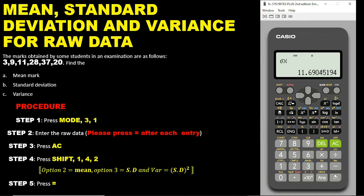Note that the variance is the square of the standard deviation. To find the variance, you do not need to re-enter anything. Use the left arrow key to go back to the standard deviation result on screen, then press the square button and press equals. The variance for this data is approximately 36 point something.